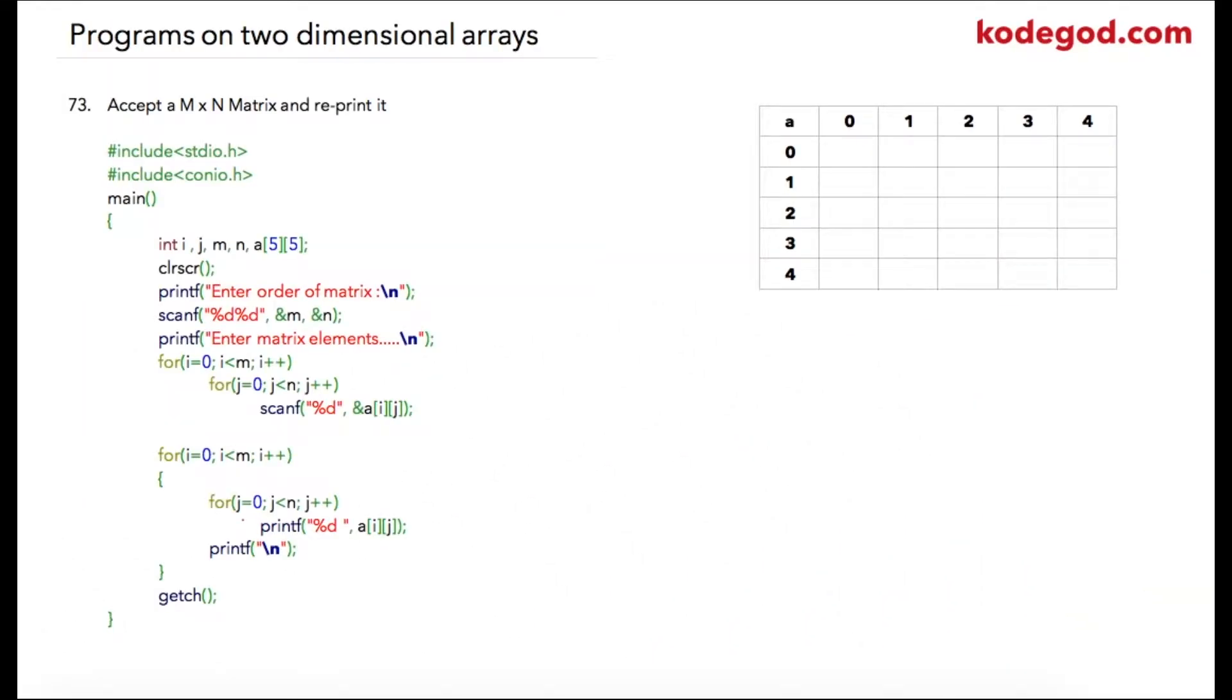Now we are going to check your programs on two-dimensional arrays. In the first program, we are going to accept an m by n matrix from the user and reprint it. As we have seen in the theory lecture, in case of matrices or when we use two-dimensional arrays, these are your rows and these are your columns.